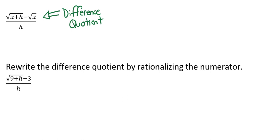A point of note here is that the equivalent form is not going to be simpler than the original form, but it has the advantage that it is defined when h equals 0. So what we see here — the square root of x plus h minus the square root of x, all over h — that's just one example of a difference quotient.